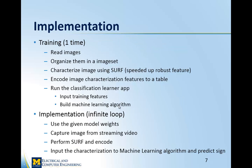The implementation happens in two parts: training and implementation, with computer vision as an integral part of both phases. In the training part — which happens only once — we read images, organize them in an image set data structure, and characterize all the images using SURF, which stands for Speeded Up Robust Features. We extract features from those hundred images per traffic sign, encode image characterization features into a table gathering all the data, and input those into the training part of the machine learning algorithm to extract weights and the model.